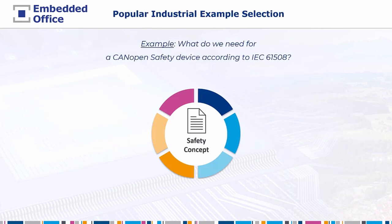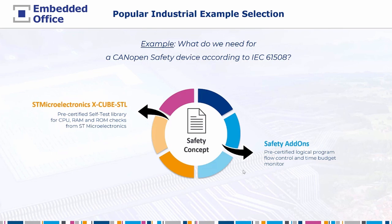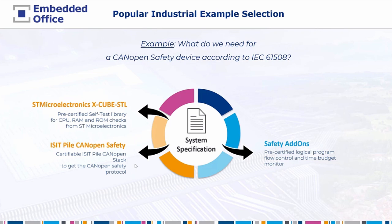Let us examine a real-world example demonstrating what we need for a CAN Open Safety device according to IEC 61508 using an STM32 microcontroller. At the center stands the safety concept. Derived from it, we choose the off-the-shelf hardware self-test libraries from STMicroelectronics. The X-Cube STL offers a pre-certified self-test library for CPU, RAM, and ROM checks. Additionally, we need program flow monitoring and runtime monitoring, so we select the safety add-ons — pre-certified components allowing monitoring of logical program flow and time budget with or without an RTOS. Derived from the system specification, a CAN Open Safety stack is needed.